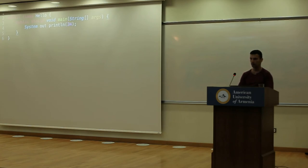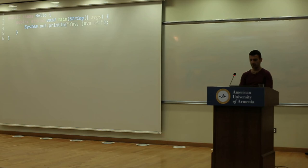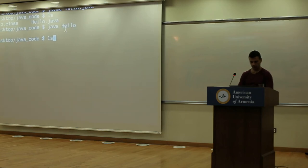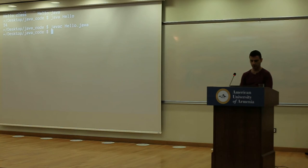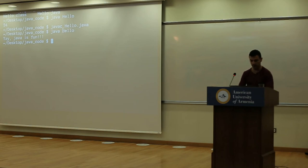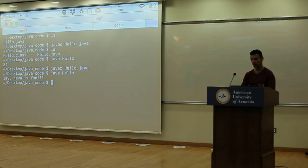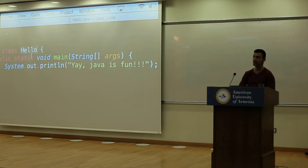If we change the printed value to a string — using double quotes — like 'yay, Java is fun', I save that, then go to the terminal and run 'javac Hello.java' again to recompile, then 'java Hello' to run it. Notice when I run java, I don't write Hello.class — I just write the name that I put in 'public class'. The file is called Hello.java, here I say public class Hello. If the file was called Person, I'd put Person here, and run 'javac Person.java' to compile and 'java Person' to run.